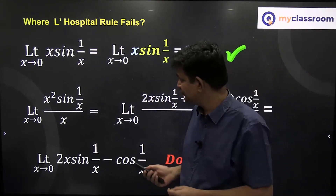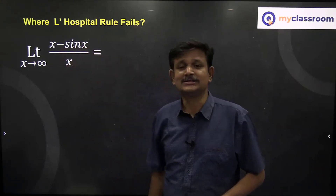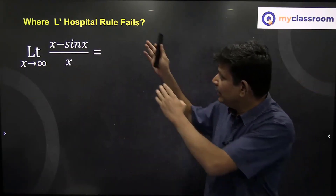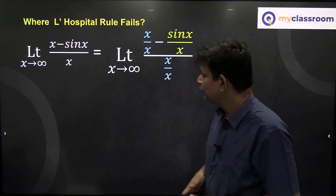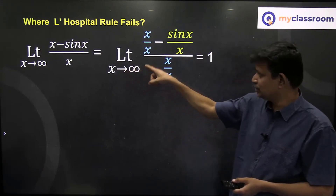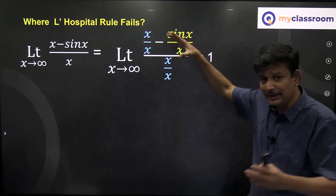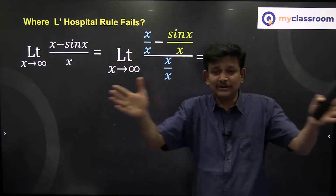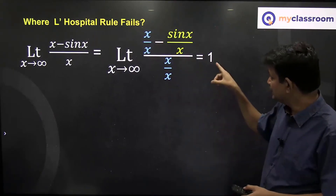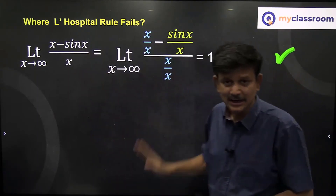Let us look at another example. Consider the limit as x→∞ of (x − sin x)/x. Since x is large, I divide numerator and denominator by x: x/x = 1, and sin x/x → 0 because sin x is bounded between −1 and 1 while x is infinitely large. So the limit is (1 − 0)/1 = 1. The limit exists and equals 1.